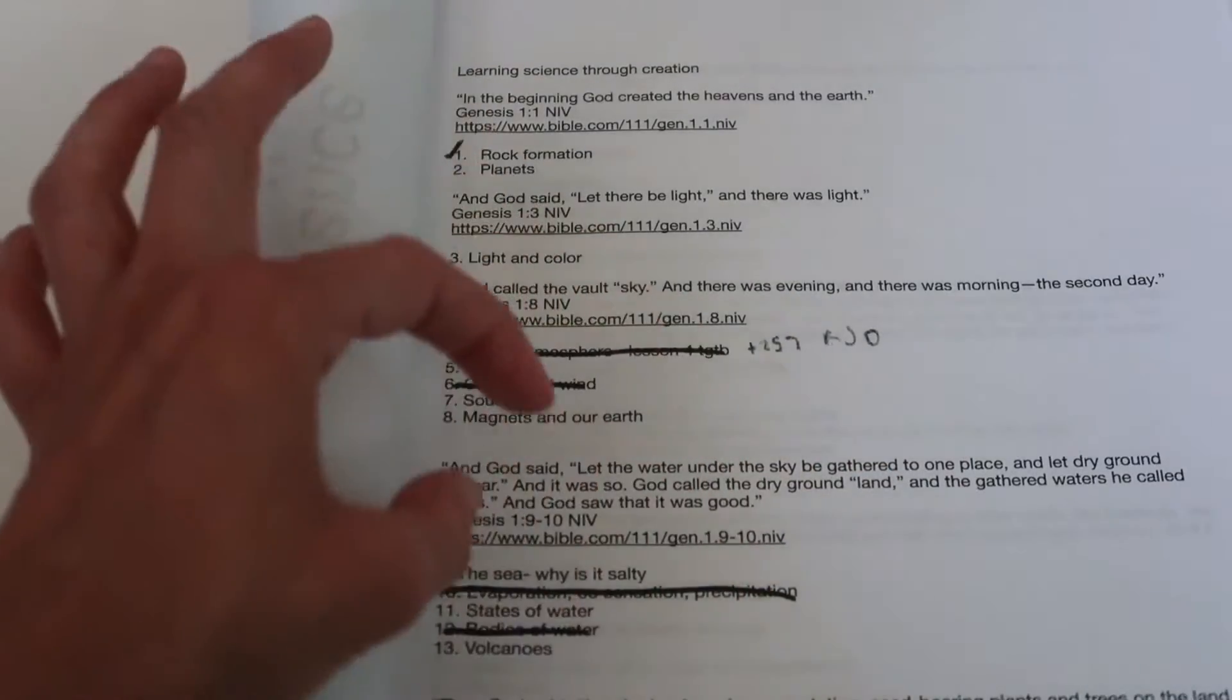And then God called the vault sky and there was evening and there was morning the second day. We'll learn about air, the earth's atmosphere, clouds and wind, sounds, magnets and our earth. So for every day that God created we are breaking that down into different science units.